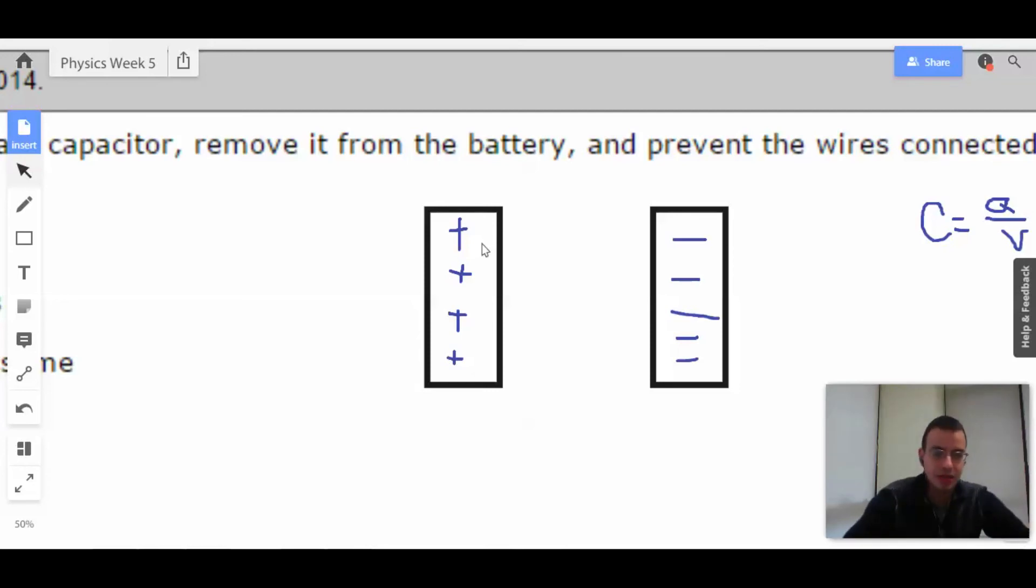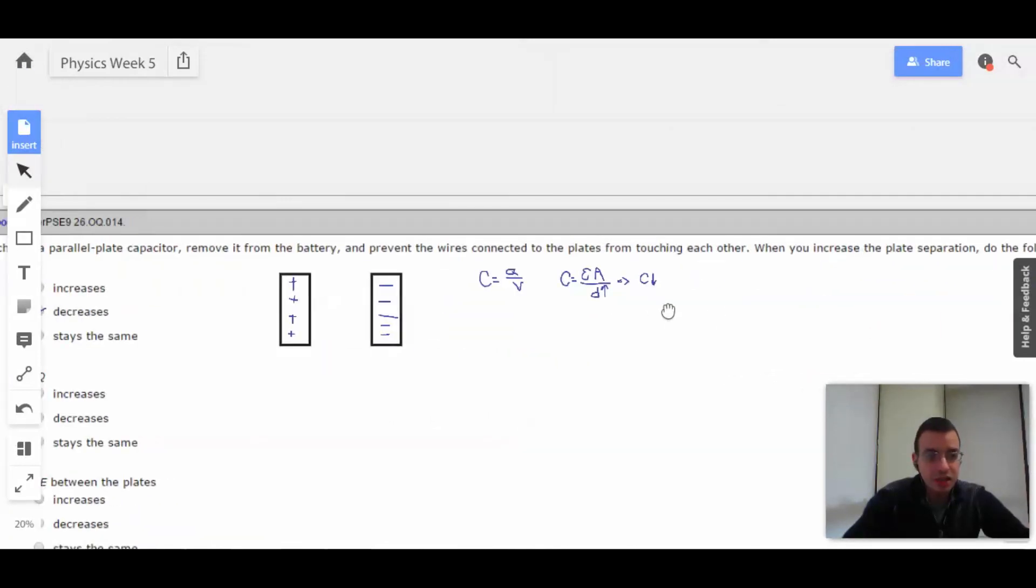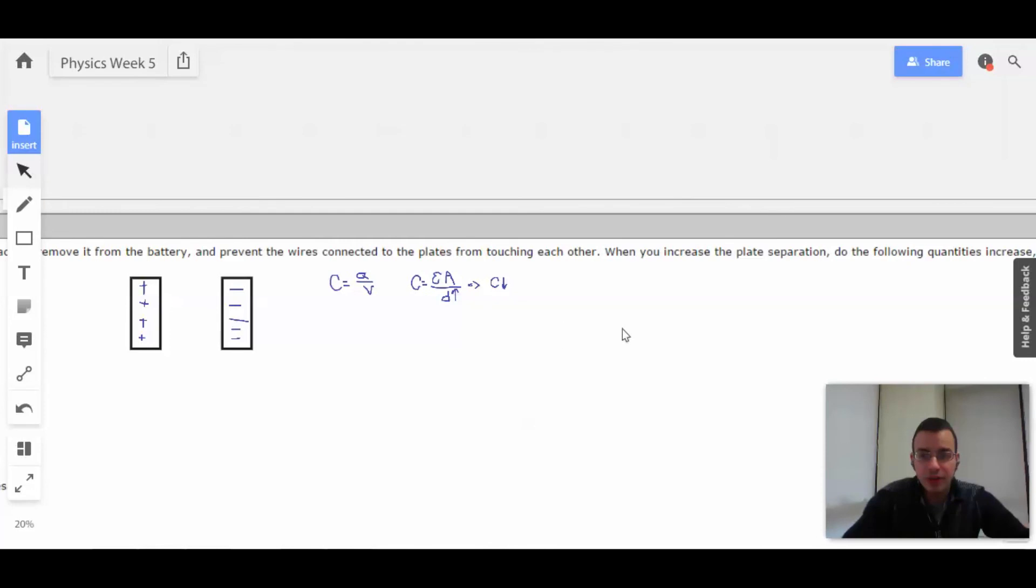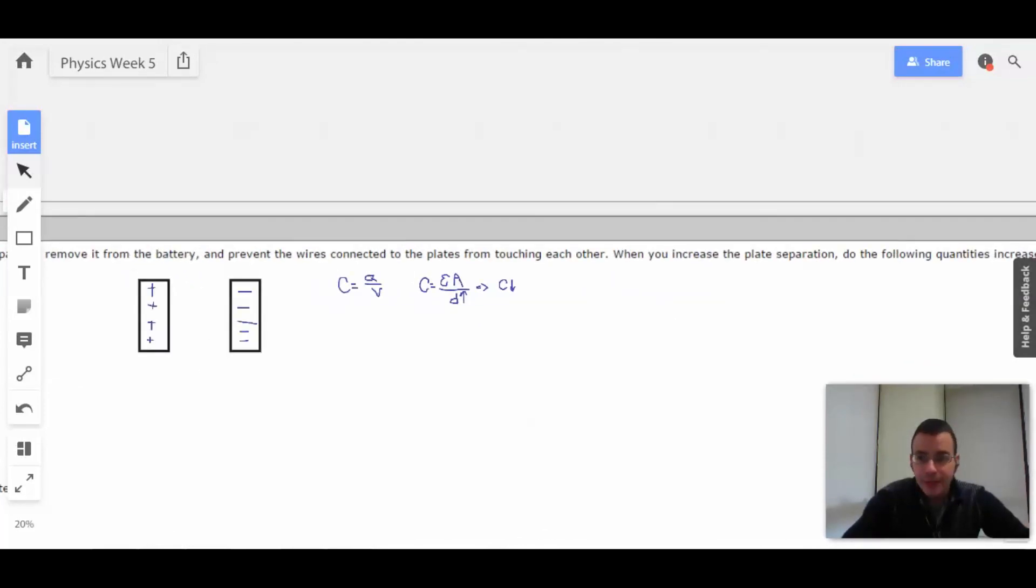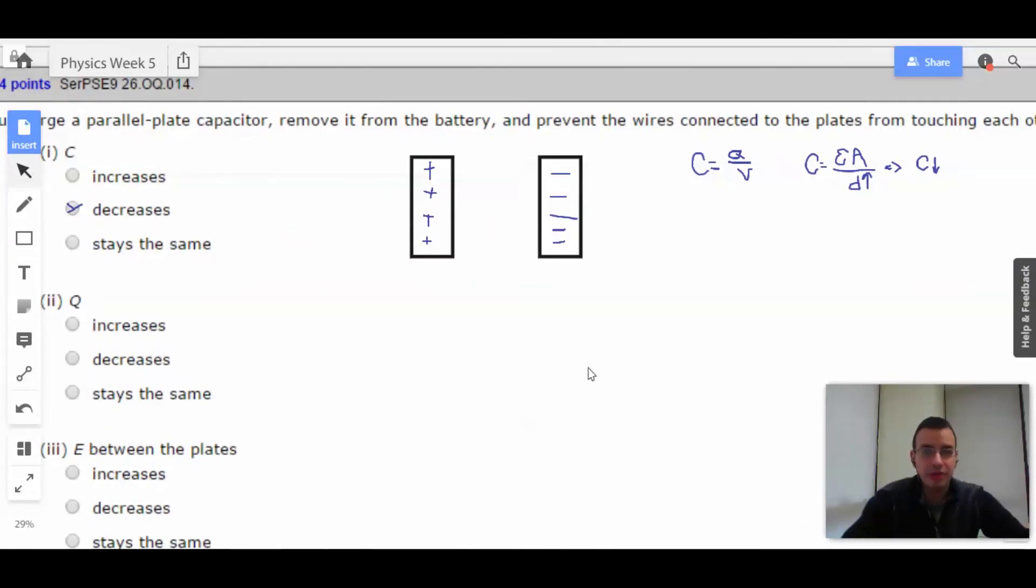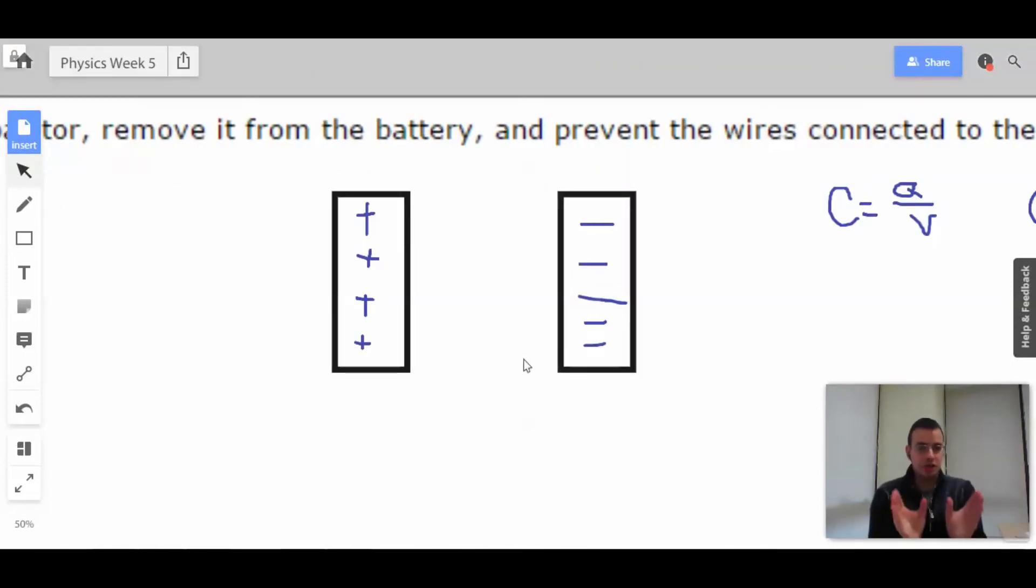So, the only way that they can travel is through a conductor. There's no conductor attached to these plates. The wire has been removed or isolated. Battery and prevent the wires connected to the plates from touching each other. Make sure I'm not reading this. It's now removed from the batteries. So, these charges are on the plates. So, it doesn't matter where you move the plates. The charges are still going to stay there.